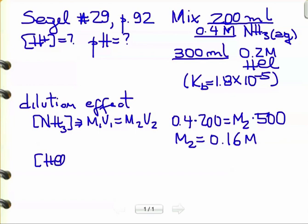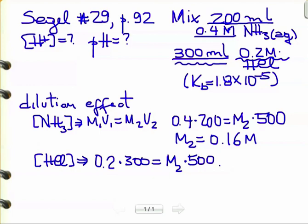Let's do the same for HCl. We start with 0.2 molar HCl in 300 milliliters. So 0.2 times 300 gives M2 times the final volume, which is again 200 plus 300, 500 milliliters. The molarity at the end for HCl is 0.12 molar.